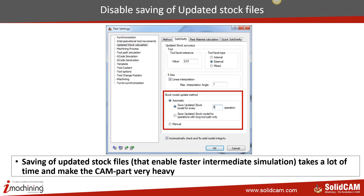These updated stock files can be really heavy depending on the part size, the operations performed, your step-down, side-step, and the length of your G-code. So if you are doing large parts, make sure you disable the saving of updated stocks. It may be worth re-simulating everything from scratch, which will be much faster than loading back a really heavy part.